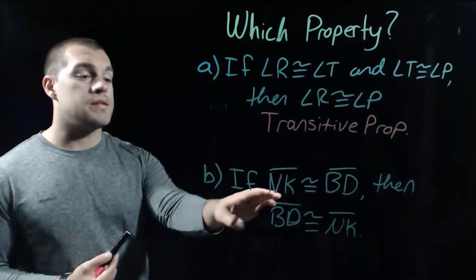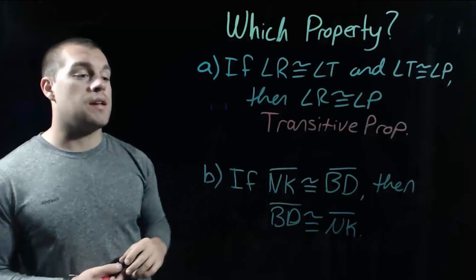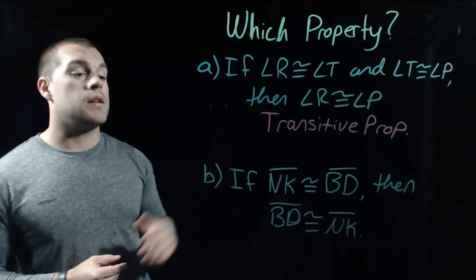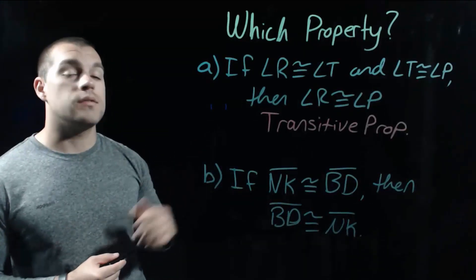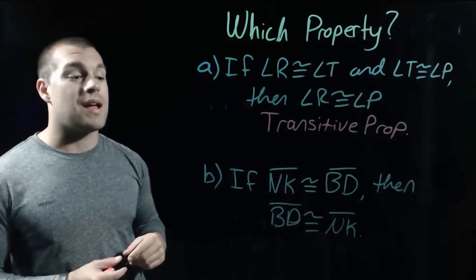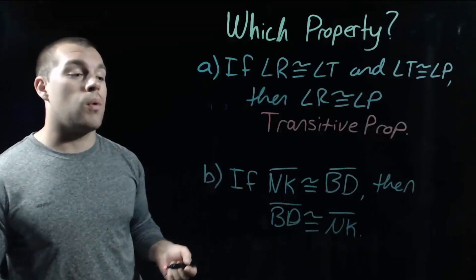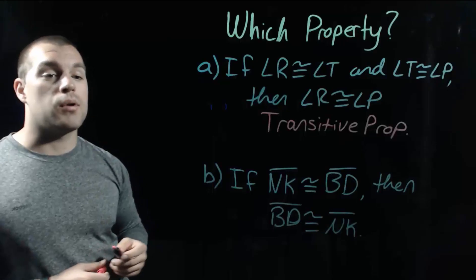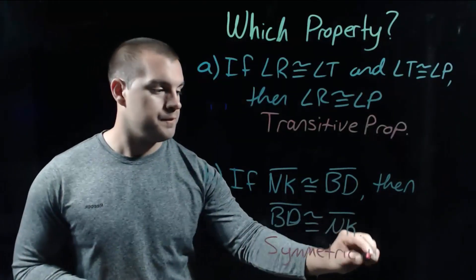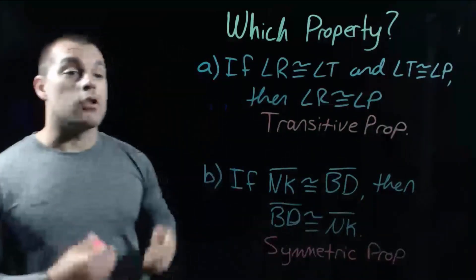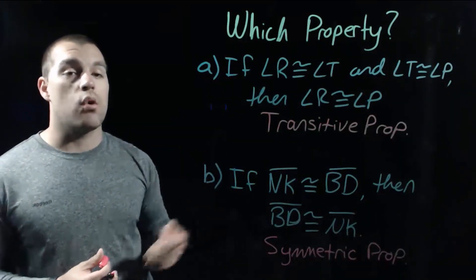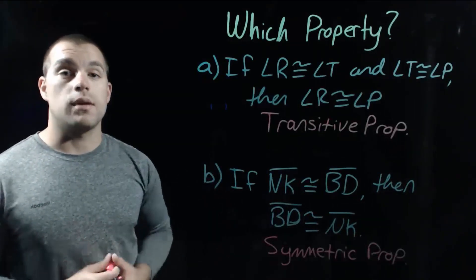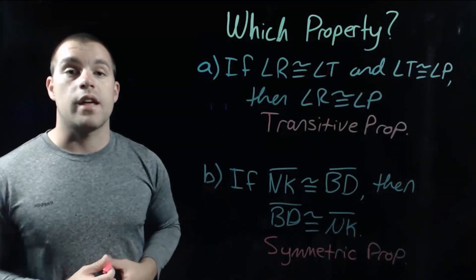In part B, it says segment NK is congruent to segment BD, and then segment BD is congruent to segment NK. We're figuring out what property this is, and this is our symmetric property — it lets us flip the order of that congruence statement around. That's going to be it for this video. Thanks for watching.